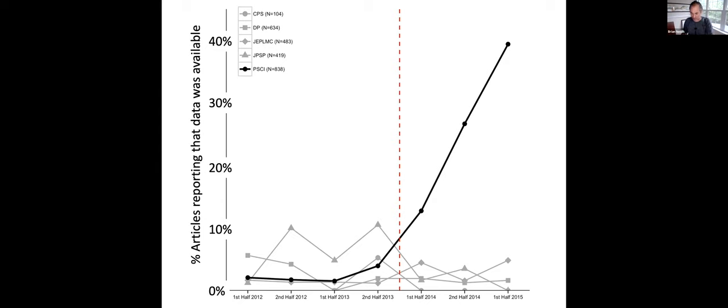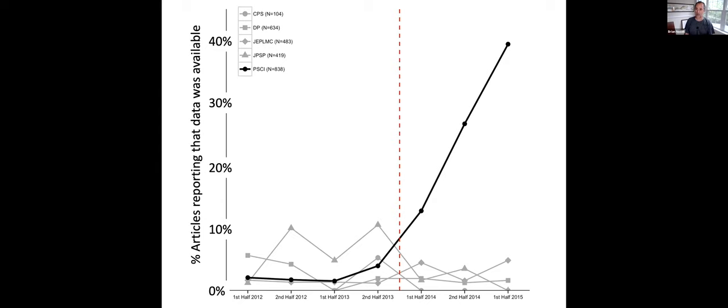There are now about 60 journals that offer badges. And so we're continuing some of these evaluations to see how much this generalizes. But it's promising evidence that even small interventions, when the behavior is already valued, can have a substantial impact on the outcome.